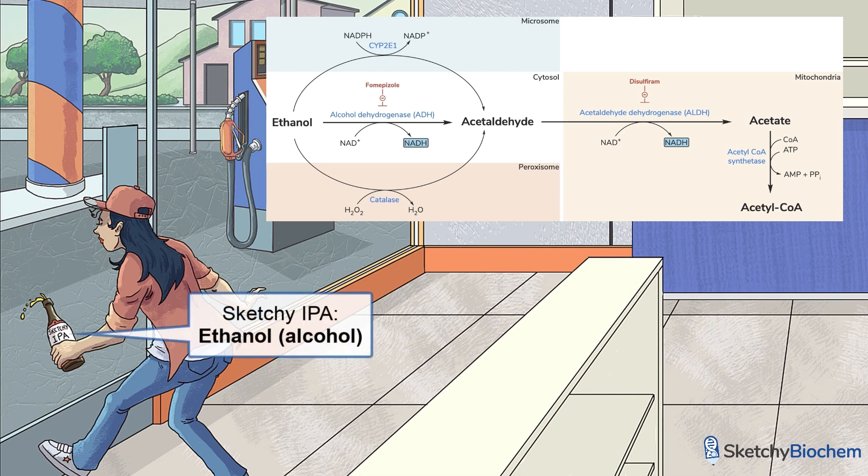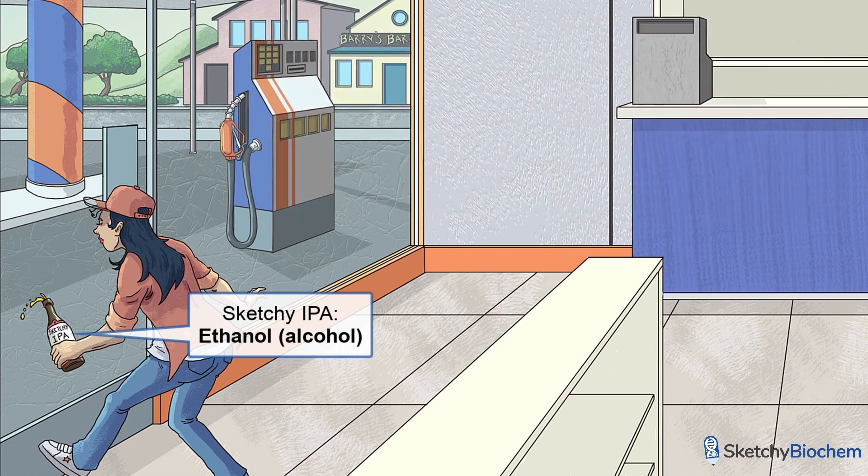The bottle of sketchy IPA represents ethanol, of course. Just a side note, we'll be using the words ethanol and alcohol more or less interchangeably throughout the sketch. Okay, let's talk about how alcohol is metabolized.